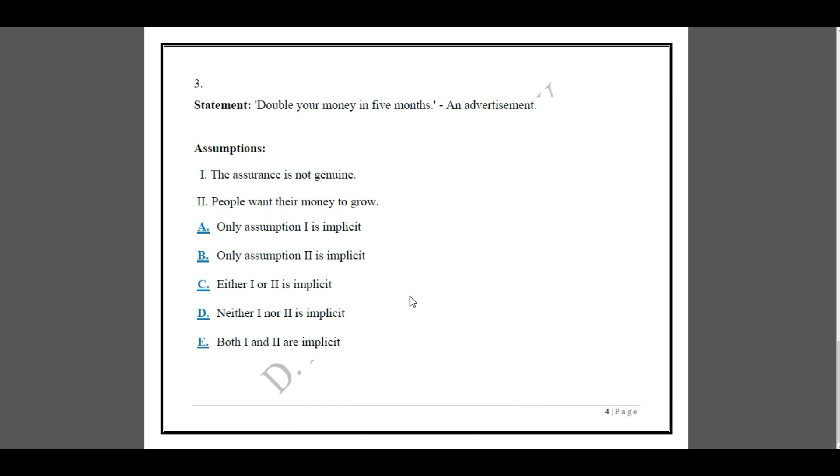I'll move on to the third example. Double your money in five months. You find an advertisement in the newspaper. Assumptions: the assurance is not genuine. Always remember, whenever people find such advertisements in the newspaper, they usually assume that it is not genuine. Because according to the bank rate of interest, the money gets doubled after 10 years. Remember that. So assumption one is not correct. They think it is not genuine. Come to the second one. People want their money to grow.